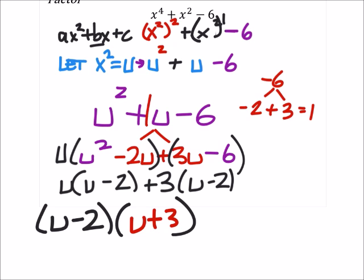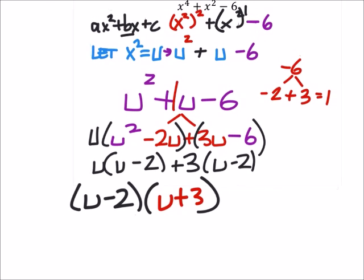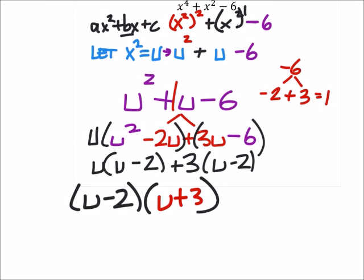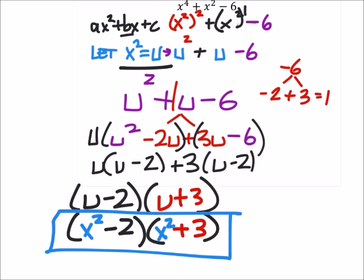But remember, u was not part of the original expression. So I need to go back and replace all my u's in this factored expression with what it was, this x squared. So I'm going to do that now. I've got minus two and plus three. But all my u's are x squared. And if the two or the three were perfect squares, I would be looking to maybe factor those out even further.